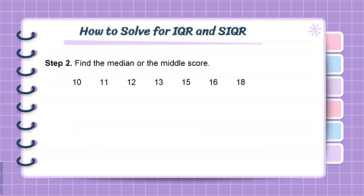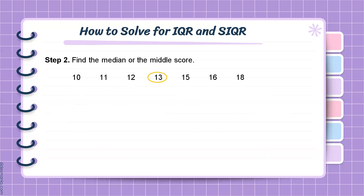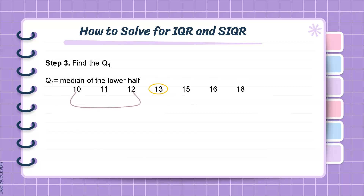Step 2: Find the median or the middle score. In this set of scores, the median is 13, considering that we have 7 scores — our middle score is the fourth score, which is 13. Step 3: Find the value of the first quartile. The first quartile corresponds to the median of the lower half of this data set. The lower half is composed of scores 10, 11, and 12. Therefore, the value of the first quartile is 11, which is the median of the lower half.